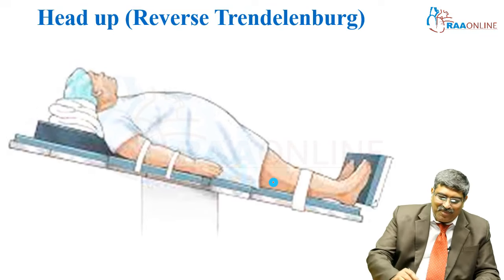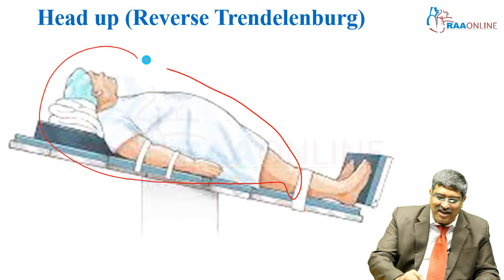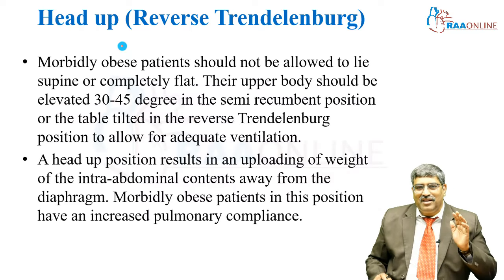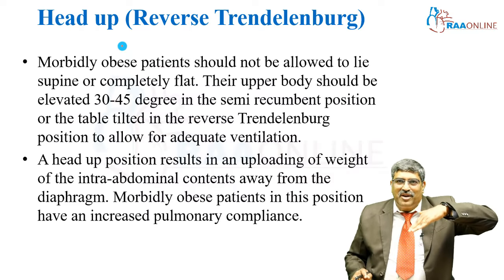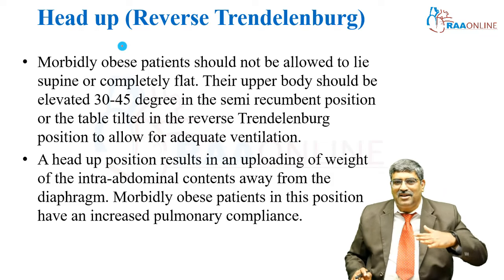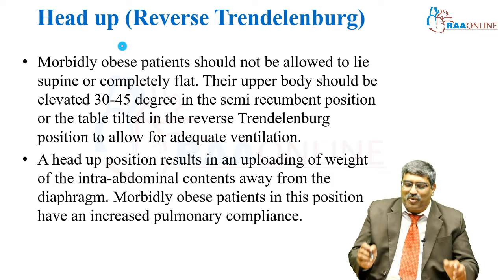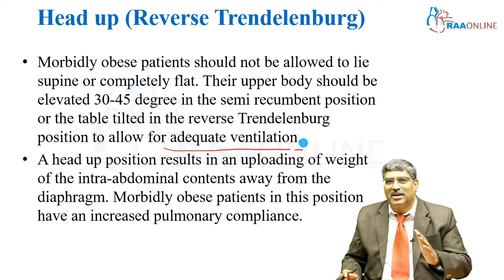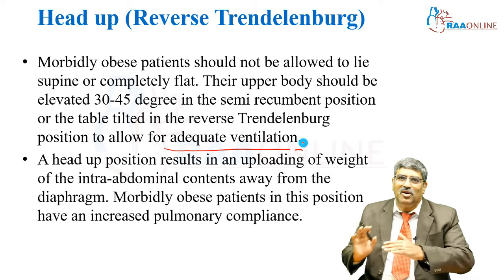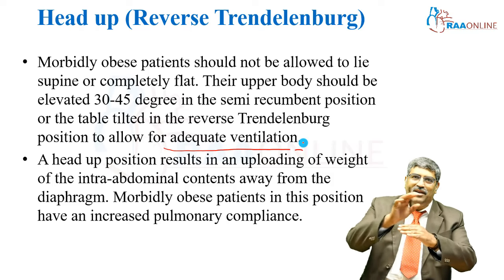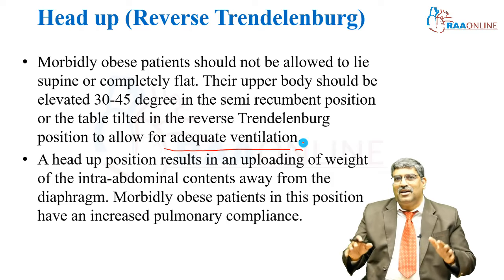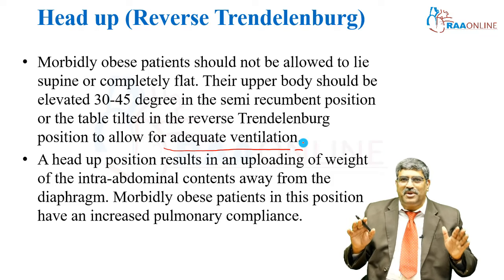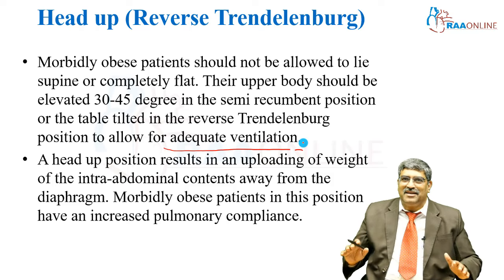Coming to head-up — the reverse Trendelenburg position — this is the ideal position for patients with obesity. The upper part is elevated to 30 to 45 degrees. This helps provide adequate ventilation because intra-abdominal contents are pushed down, there is no abdominal pressure on the respiratory system, and morbidly obese patients usually tolerate the reverse Trendelenburg nicely with improved saturation.